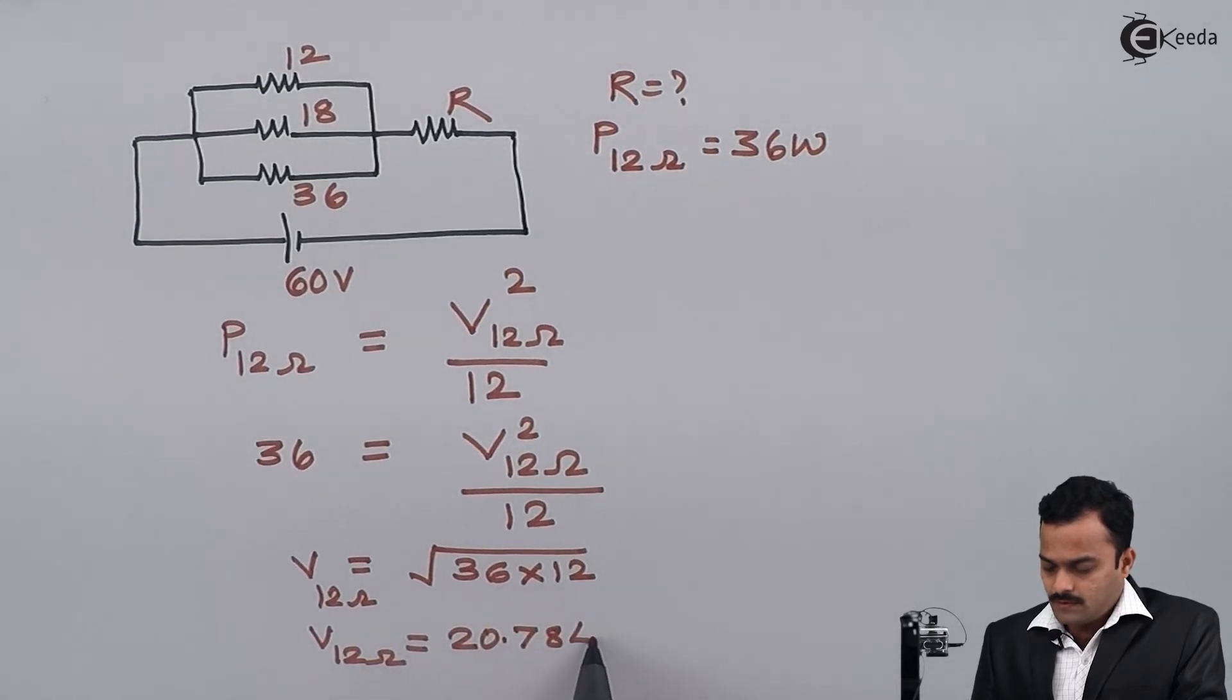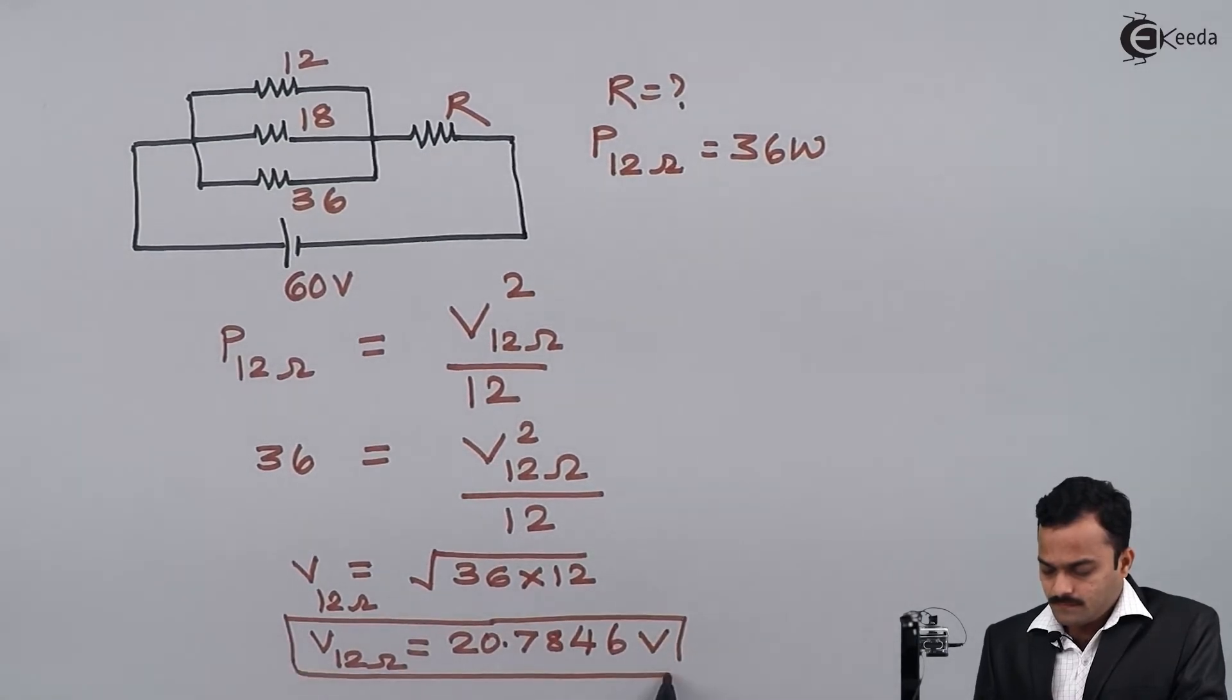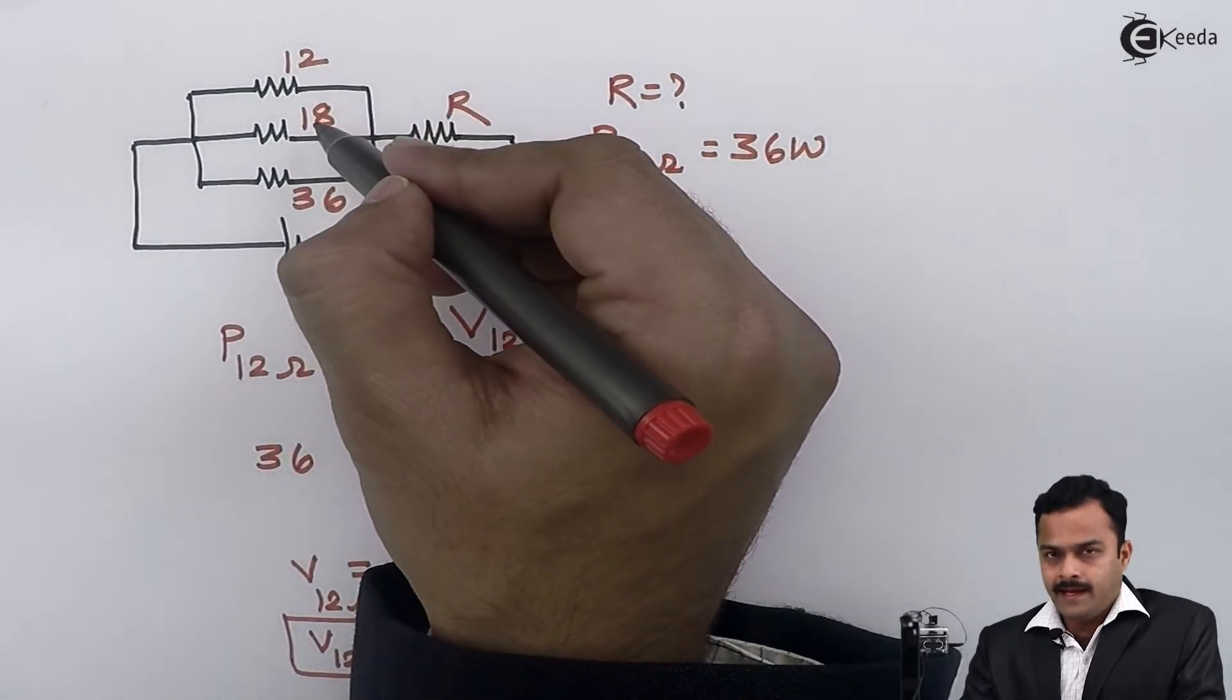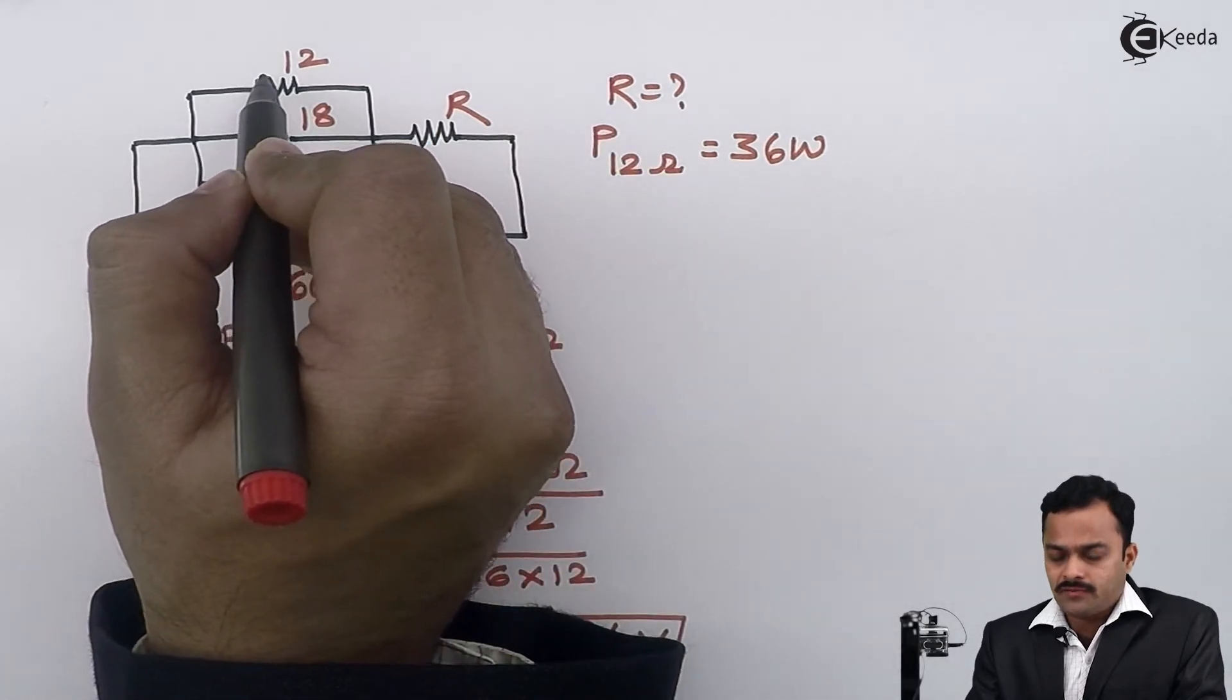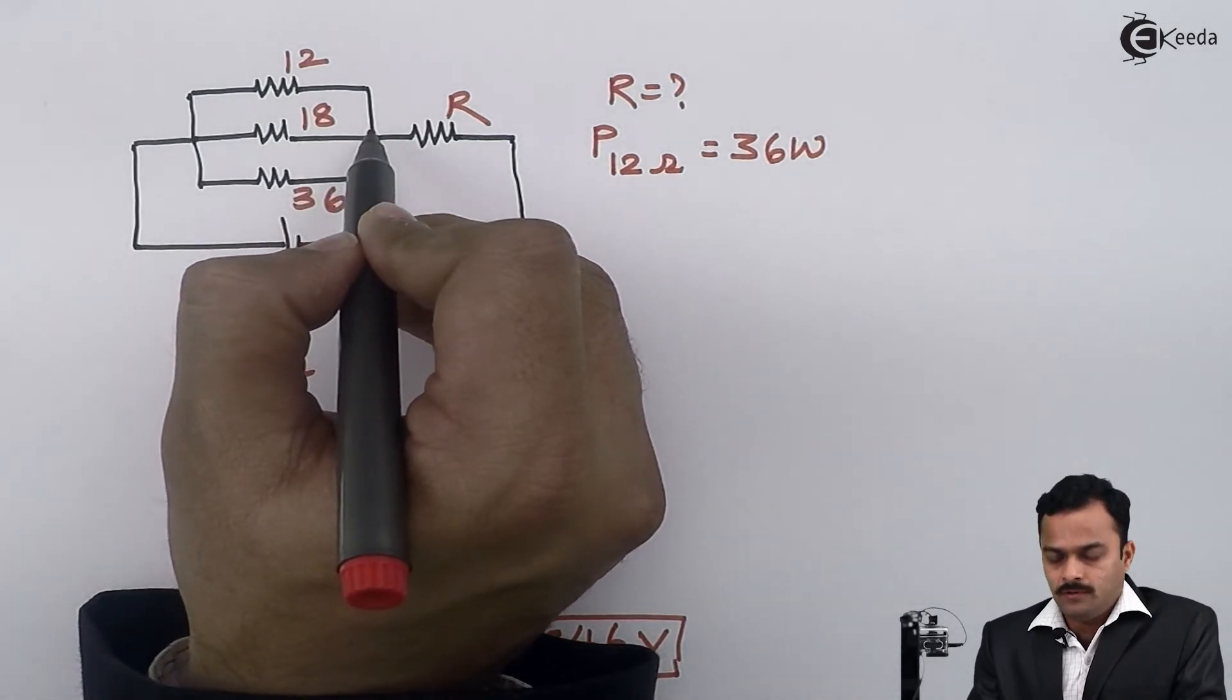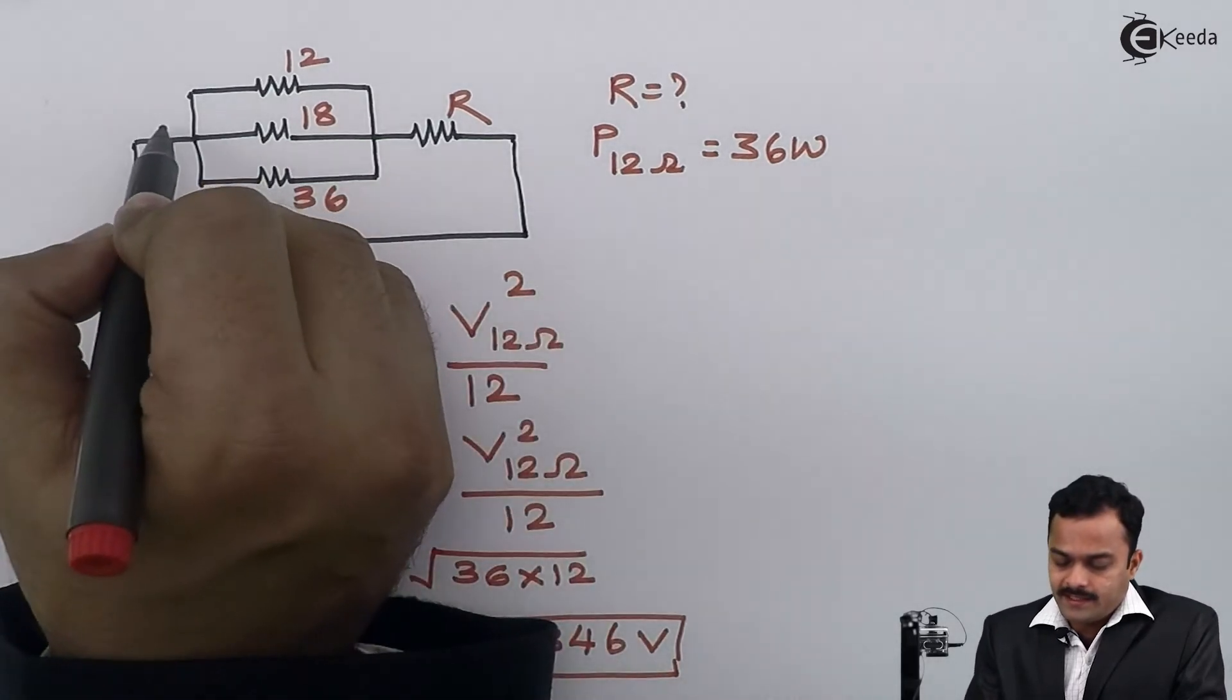Now, 12, 18, and 36 are in parallel, meaning whatever the voltage of 12 ohm I'm getting will be the same voltage across 18 ohm and 36 ohm. I can write the voltage of these two points here.